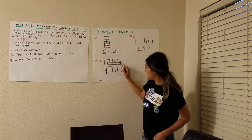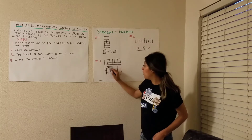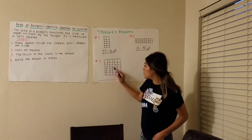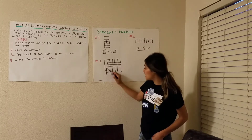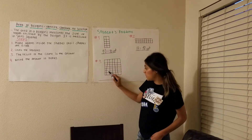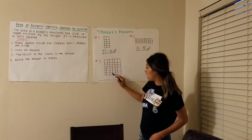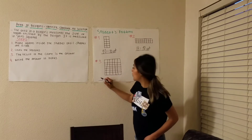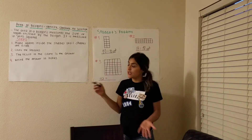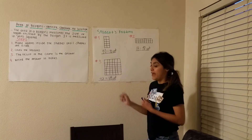One, two, three, four, five, six, seven, eight, nine, ten, eleven, twelve, thirteen, fourteen, fifteen, sixteen, seventeen, eighteen, nineteen, twenty, twenty-one, twenty-two, twenty-three, twenty-four, twenty-five, twenty-six, twenty-seven, twenty-eight, twenty-nine, thirty, thirty-one, thirty-two, thirty-three, thirty-four, thirty-five, thirty-six, thirty-seven, thirty-eight, thirty-nine, forty, forty-one, and forty-two. So we have forty-two squares, but we have to put our answer in inches, so it's 42 inches.